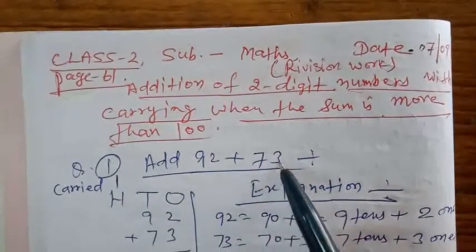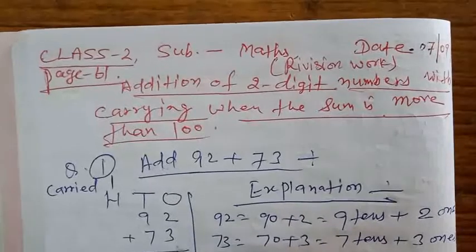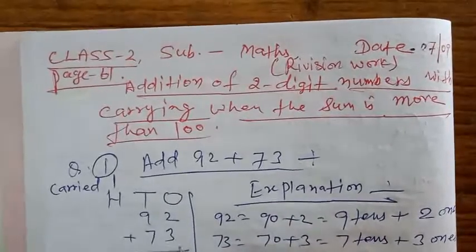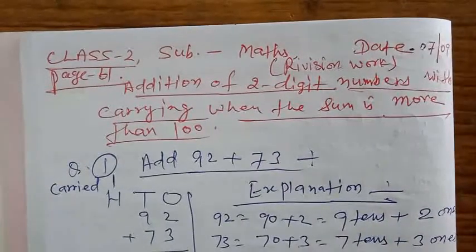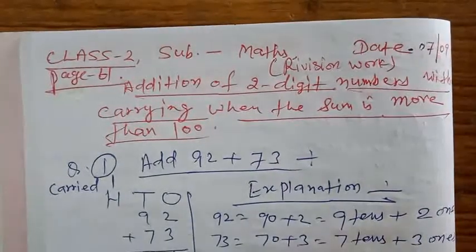Add 92 plus 73. Let us keep adding. So, once to once, add the ones: 2 plus 3 equals 5. We have 5 left.